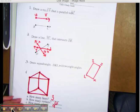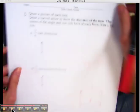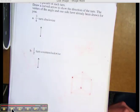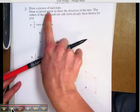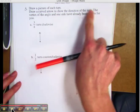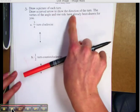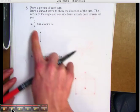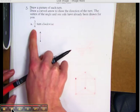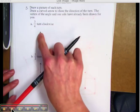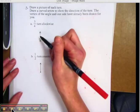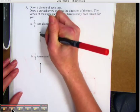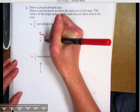Let's flip our page to number five. Number five reads draw a picture of each turn. Draw a curved arrow to show the direction of the turn. The vertex of the angle and one side have already been drawn for you. Letter A asks us to draw a three-fourth turn clockwise. I remember that clockwise is this way. So, I'm going to draw one-fourth of a turn clockwise would be right here.